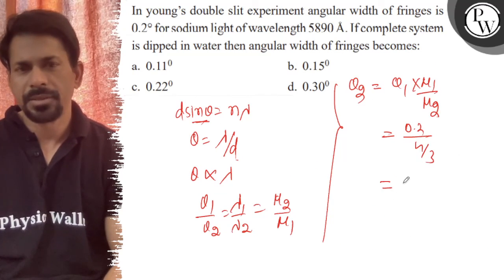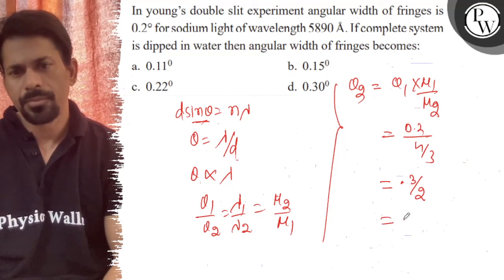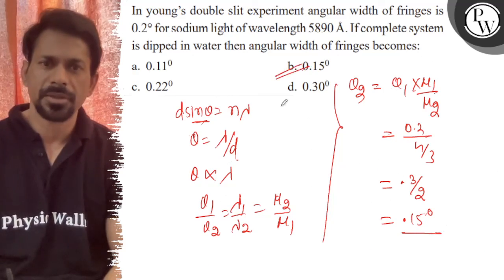So that will come to 3 by 2, 0.3 by 2, and that is equal to 0.15 degrees. So the right answer of the question is B. All the best.